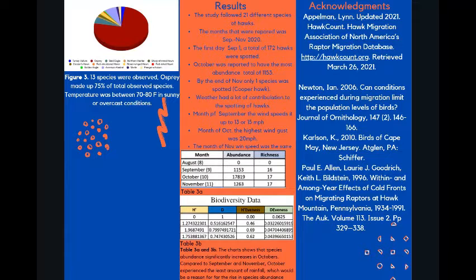The weather in September speeds was 13 to 15 miles per hour, as well as the month of October, the highest wind gusts picked up to 20 miles per hour. And throughout the month of November, it was the same as October.